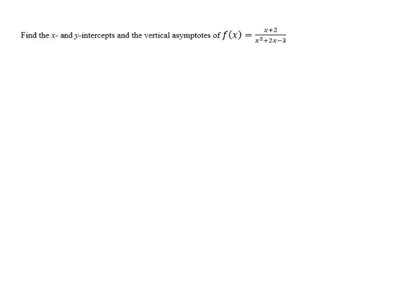Find the x and y intercepts and the vertical asymptotes of f(x) = (x+2)/(x²+2x-3).